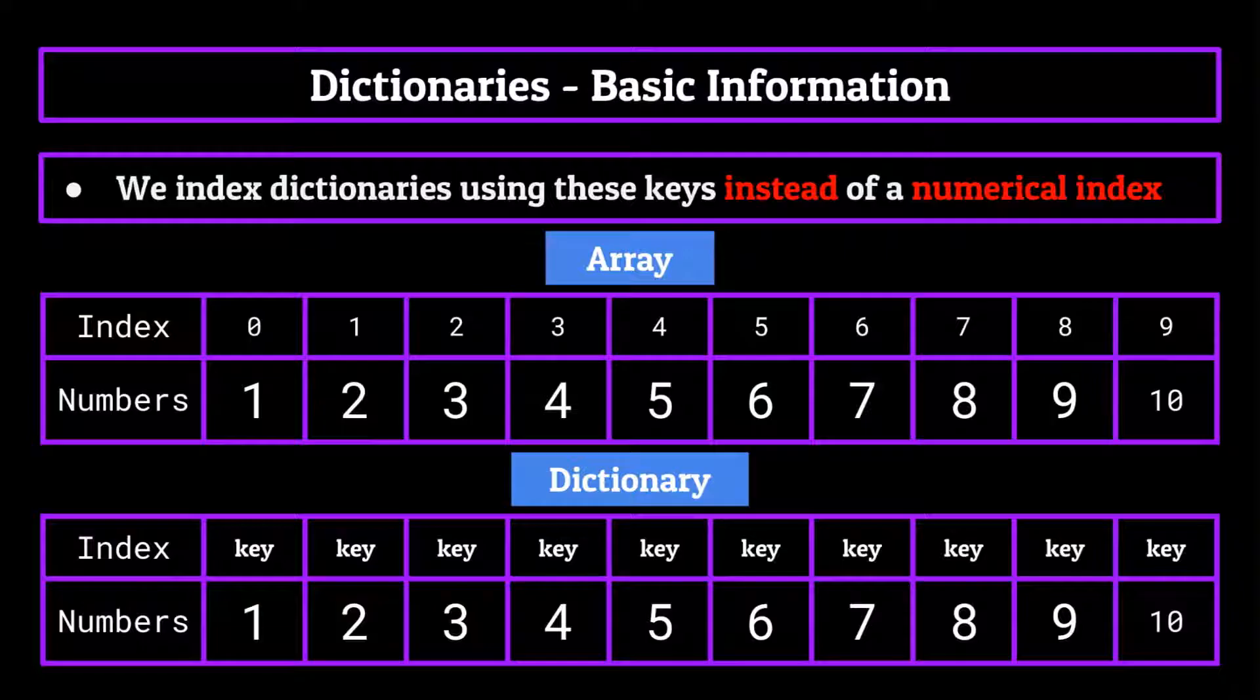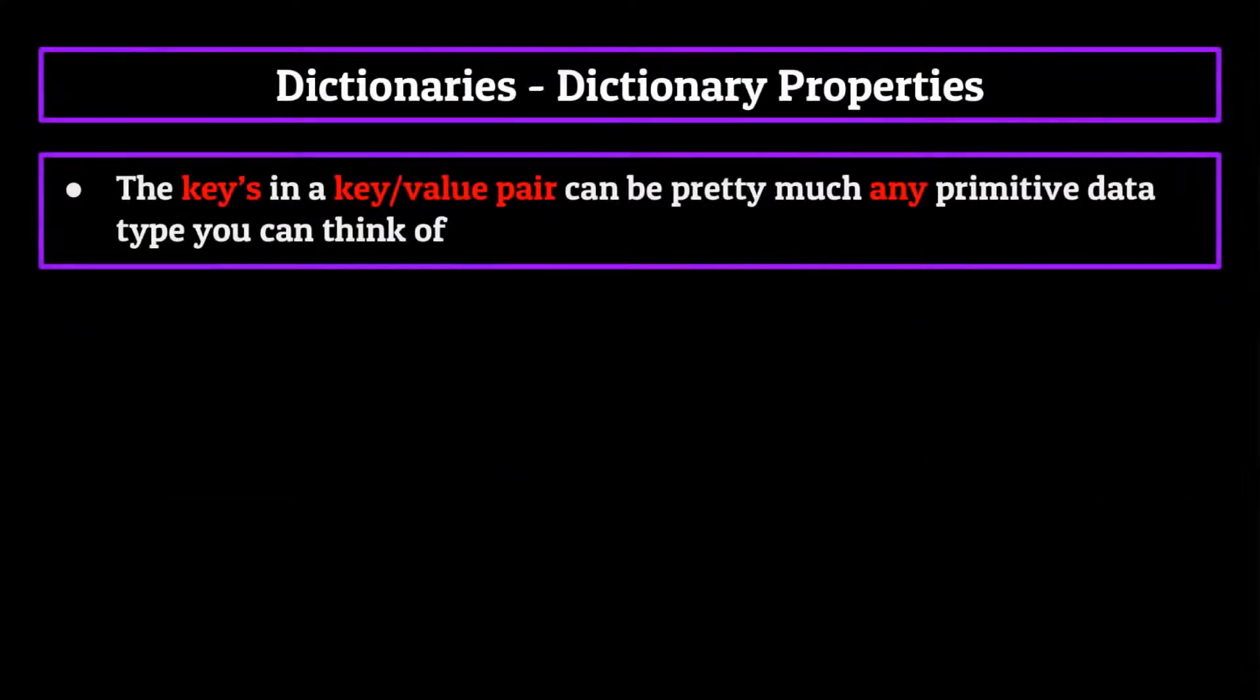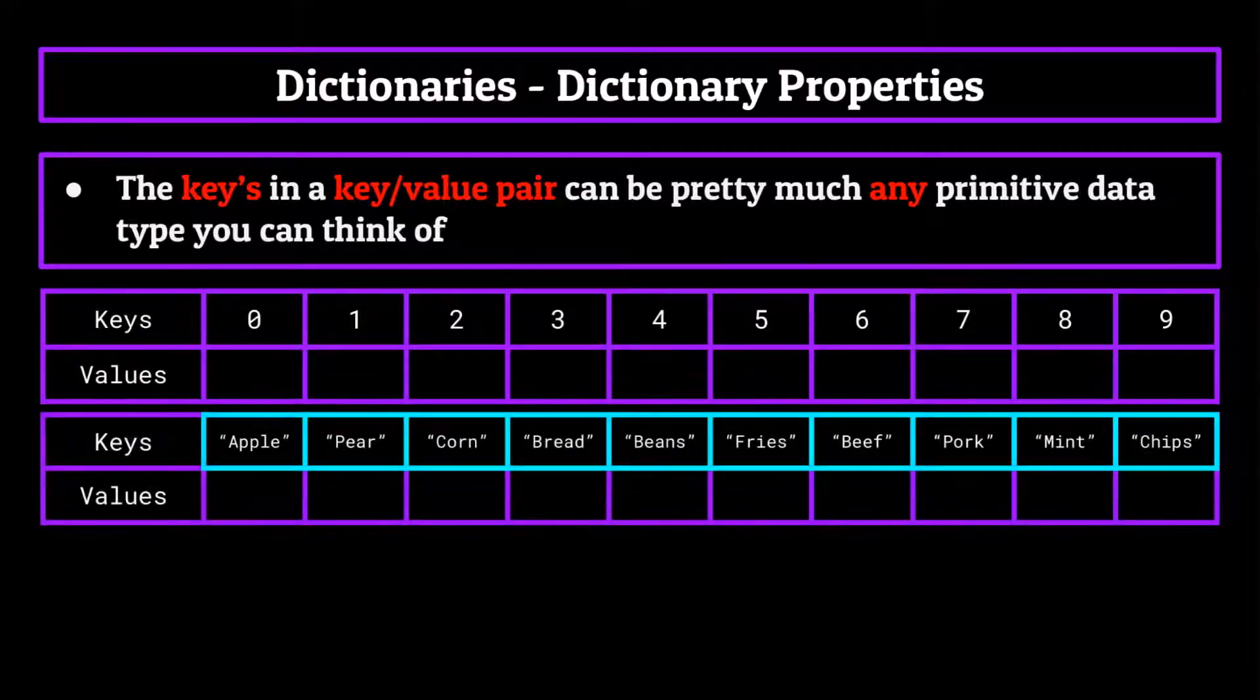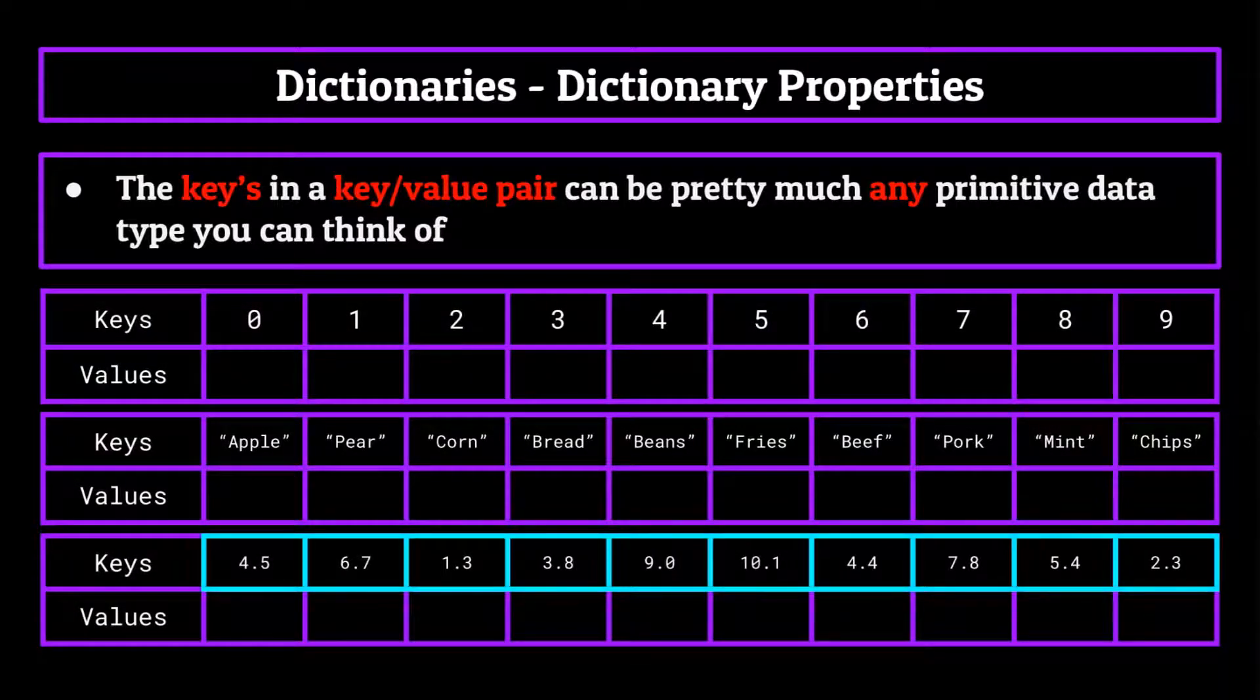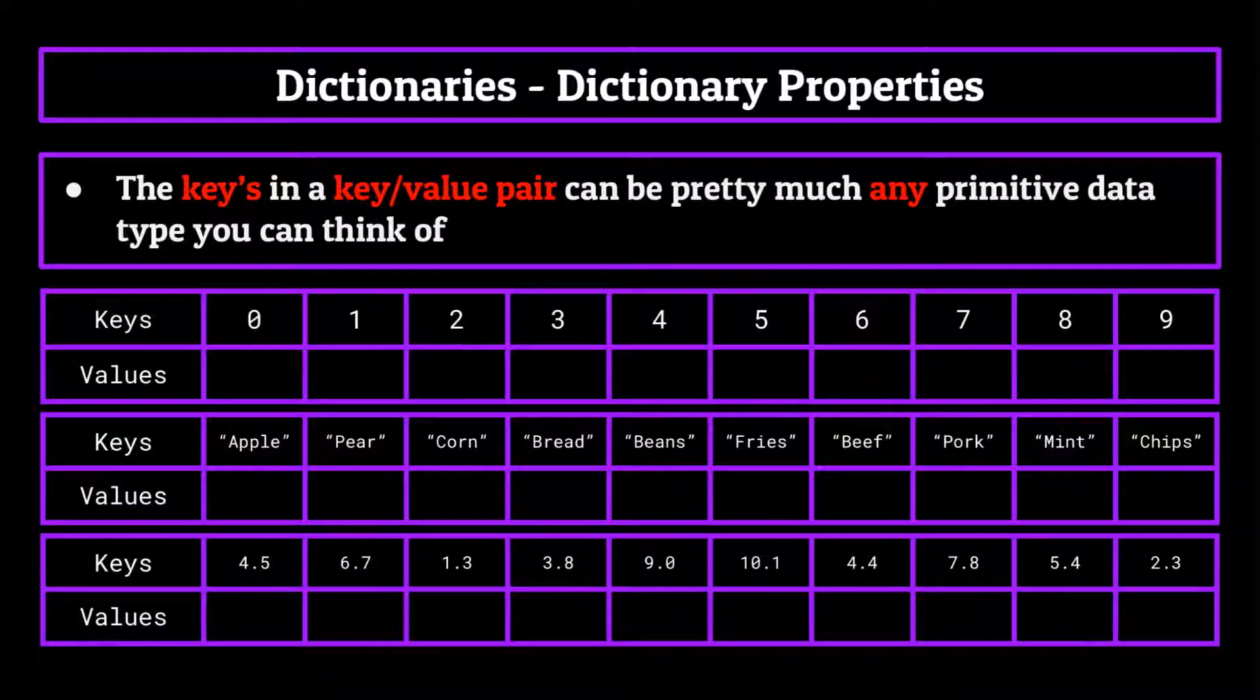So what exactly are these key value pairs going to look like? Well, they can be just about anything. The keys in a key value pair can be pretty much any primitive data type that you can think of. We can have a dictionary which has integers as the keys, one with strings as the keys, one with doubles as the keys, there's really a lot of flexibility.